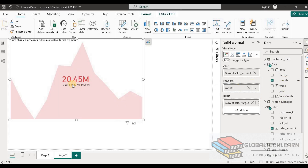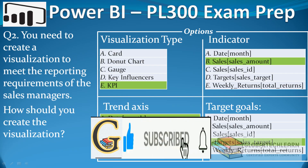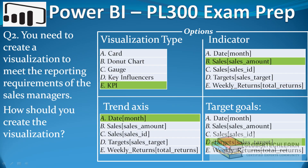Now we can see we are getting the KPI — that is sales versus target. Let's go back to our question. Under options: first, as a visualization type, we added the KPI visual on the report. Then under trend axis we selected the month from the date table. Then under indicator we added the sales amount field from the sales table. And under target goal we added the sales target from the target table.